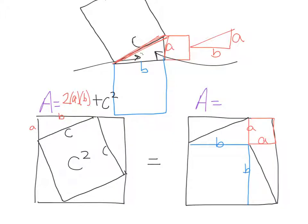So over on the right side, I still have four triangles, two ab. And then I add the area of each square, so that's plus a squared plus b squared.